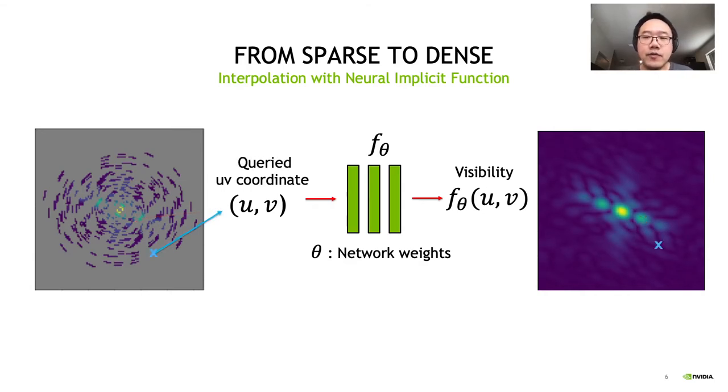In the inference stage, for any query UV coordinates, given the optimized network weights, we can get its corresponding visibility even if the query UV coordinates is not sampled in the measurement.